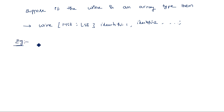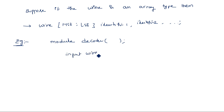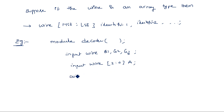Now let's see an example. Module some_decoder: input wire G1, G2, G3; input wire [2:0] A; output register [7:0] Y. This is a nominal representation showing wire and register declarations inside a module. This is what the wire declaration and register declaration look like.